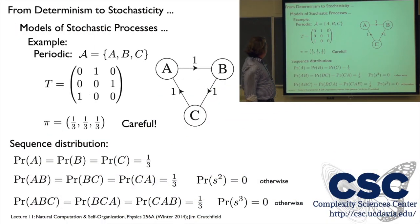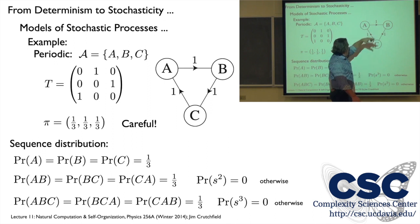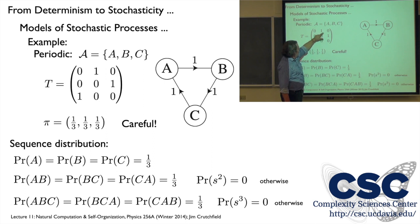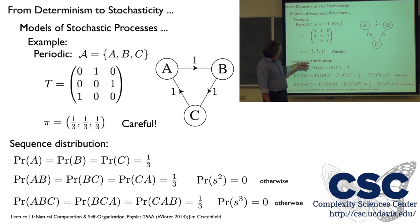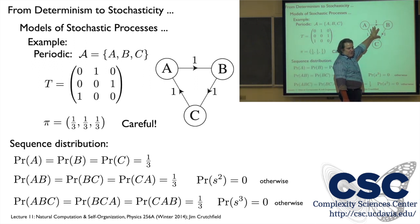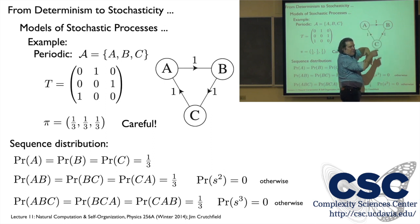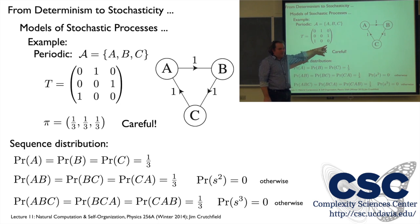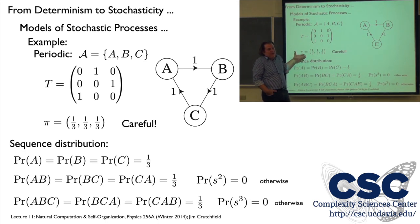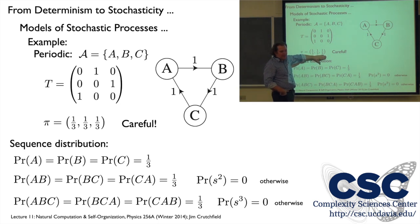Maybe something simpler: a periodic process with states A, B, C, where with probability one I go A to B to C to A and so on. The transition matrix T is now just a permutation matrix — each row has a single transition probability of one. The curious thing is that if you want to calculate pi using the eigenvalue equation, you actually have to be careful. I can put any distribution here and it'll be invariant under three steps. So the standard eigenvalue analysis techniques don't work well in this periodic case. We'll come back and solve this in a different way.